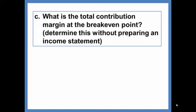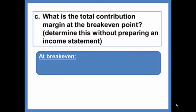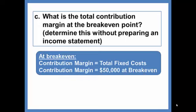What is the total contribution margin at the break-even point? Determine this without preparing an income statement. This is here to demonstrate what will always hold true at the break-even point: your contribution margin is going to be equal to your total fixed costs. So for this company, the contribution margin will be $50,000 at break-even.